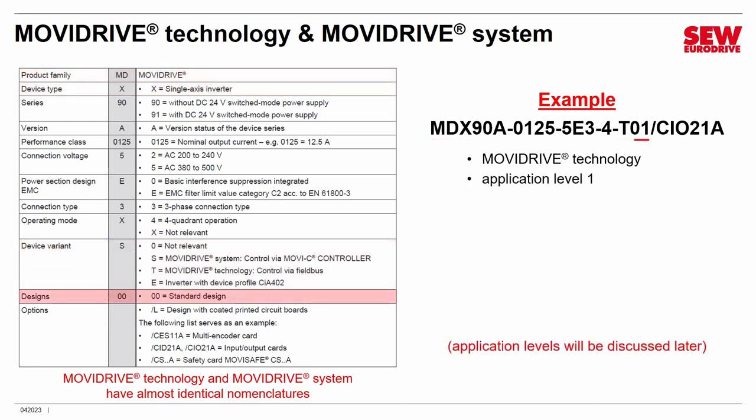Next, there is a number after the T — in this case 01. That is called the application level. MoviDrive Technologies come in three possible application levels — zero, one, or two — that determine their capabilities. An 01 is probably the most common type, meaning application level one; we're not covering the differences between levels here. Going back to the 90: that tells you there is no built-in DC 24-volt power supply, meaning you must supply 24 volts externally. That's important and very helpful to know.